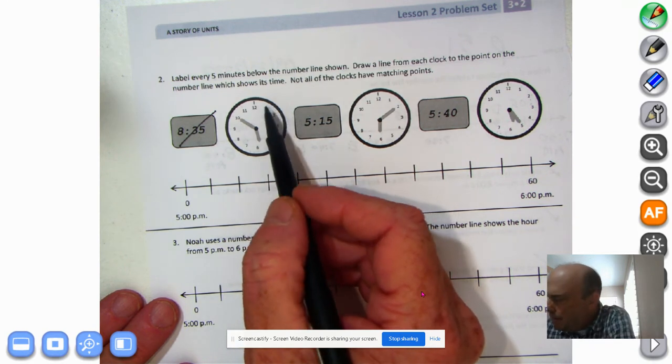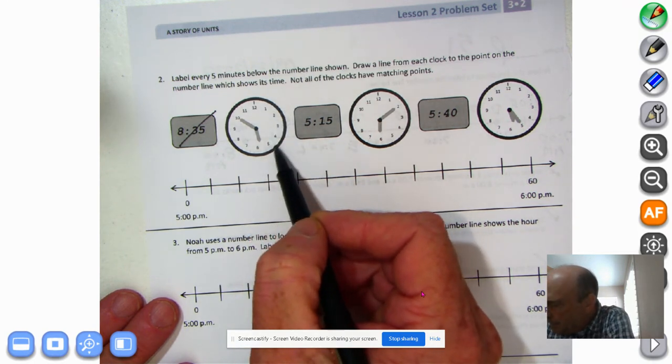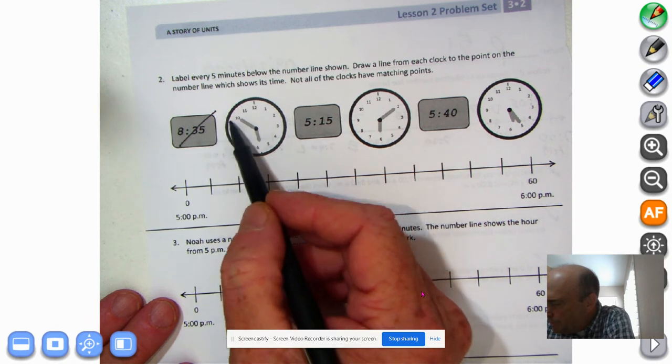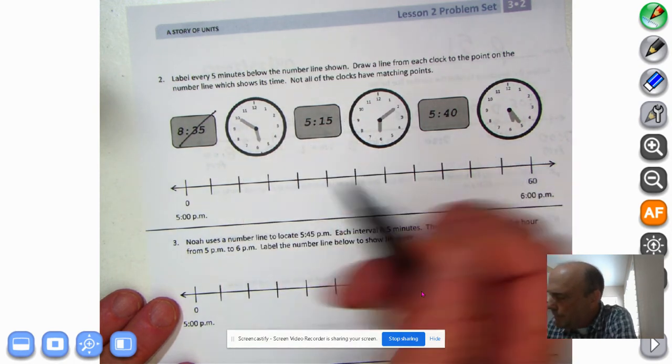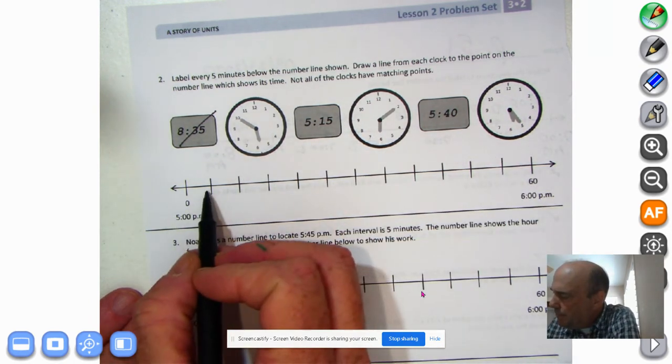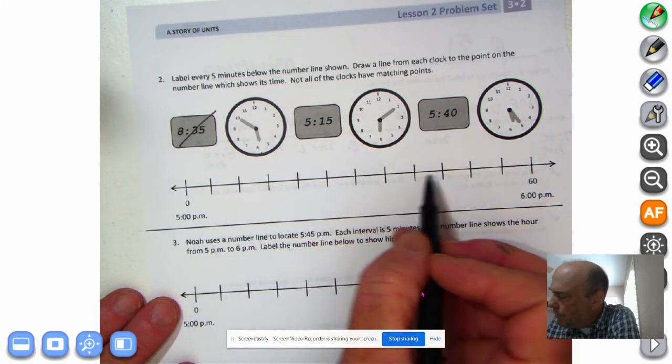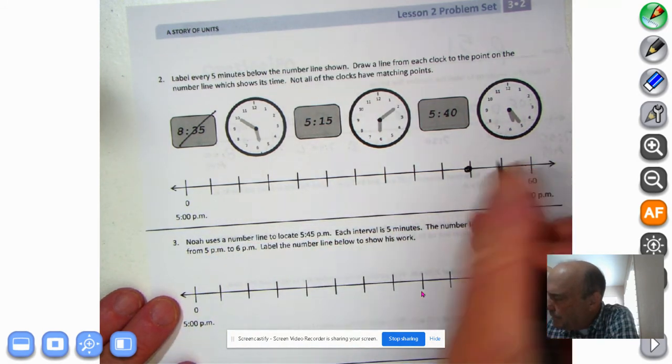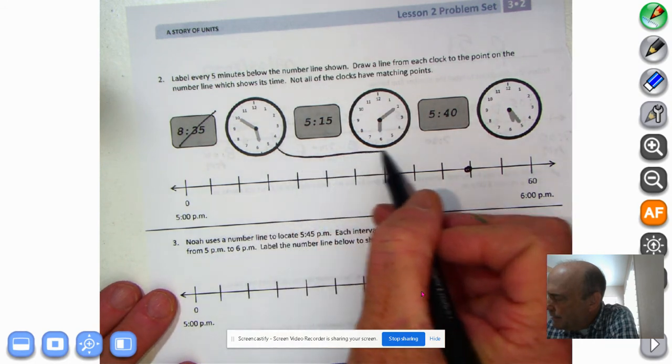Here we got this clock here. And what's it saying? It's not quite 6 o'clock, so it's still in the 5 o'clock hour. 5:10, 15, 20, 25, 30, 35, 40, 45, 50. Guess what time it is? 5:50. Okay, let's do it. 5:10, 15, 20, 25, 30, 35, 40, 45, 50. And then we'll draw a line that connects.